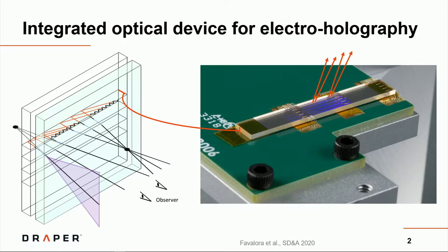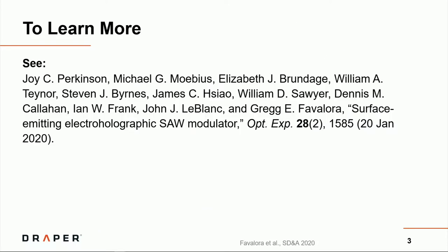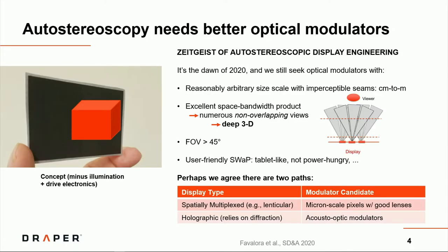To our knowledge, this was the first demonstration of a monolithic surface-emitting SAW modulator. And I'll remind folks what SAW modulators are in a few slides. There's a paper that was published in Optics Express, the 20 January 2020 issue, that I invite you to look at if you'd like more details or reference citations later.